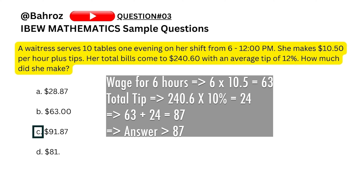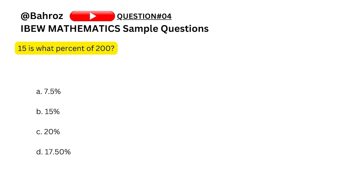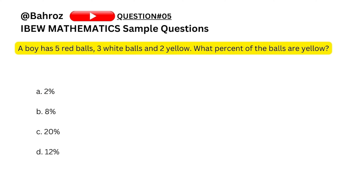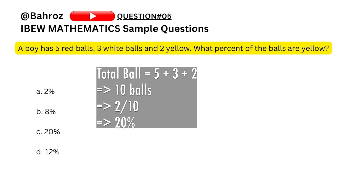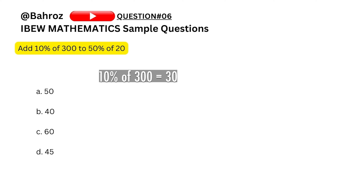Question four: 15 is what percent of 200? Ten percent of 200 is 20, which means 15 would be less than 10 percent, so it cannot be B (15%), cannot be C (20%), cannot be D (17.5%). The answer is A, which is 7.5 percent. Question five: a boy has 5 red balls, 3 white balls, and 2 yellow balls — what percent of balls are yellow? Total is 5 plus 3 is 8 plus 2 is 10, and 2 out of 10 is 20 percent, so C is our answer.